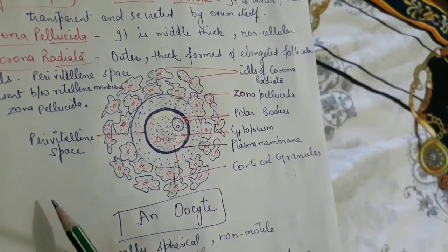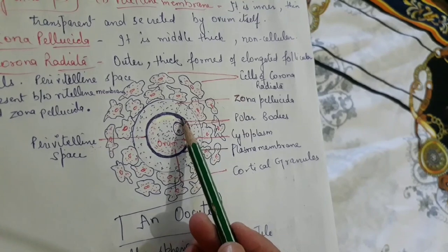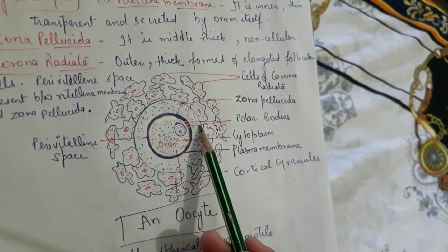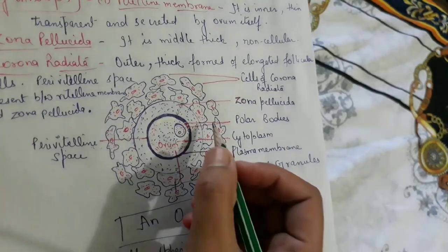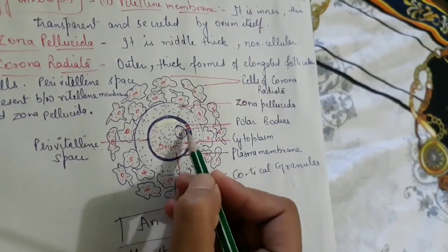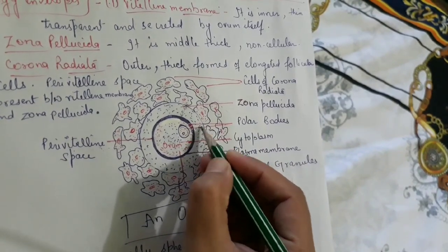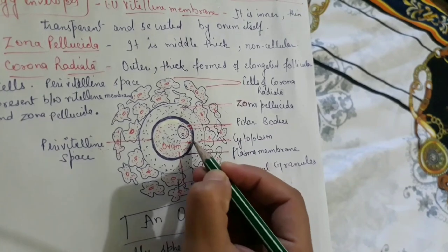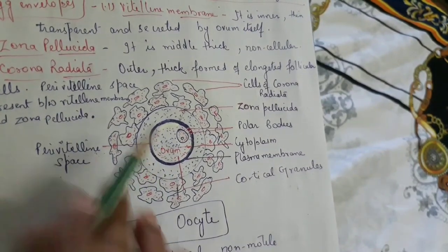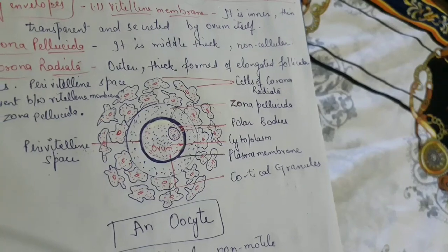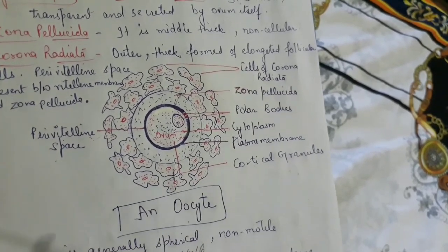To summarize the ovum structure: there is the outer corona radiata, the thick zona pellucida, and the inner vitelline membrane. The space between the zona pellucida and the vitelline membrane is called the perivitelline space. The human ovum is microlecithal because the yolk content is negligible. The oocyte will later on mature to form the egg or ovum when fertilization happens.